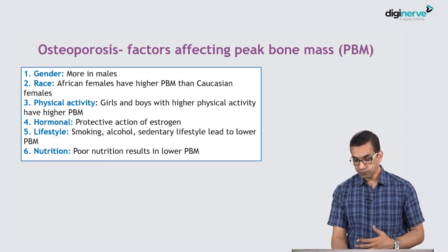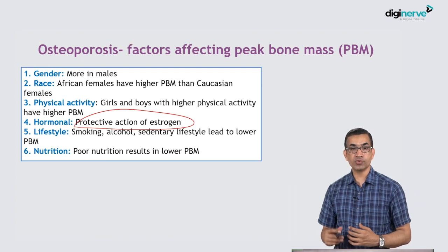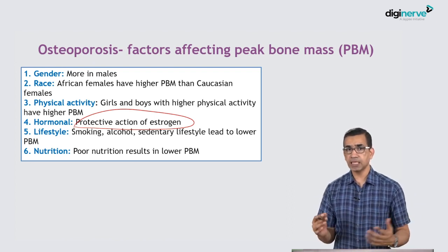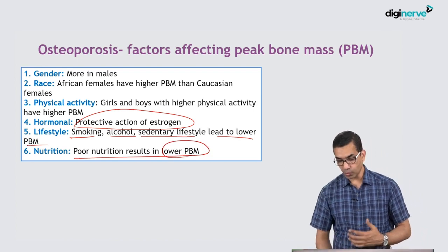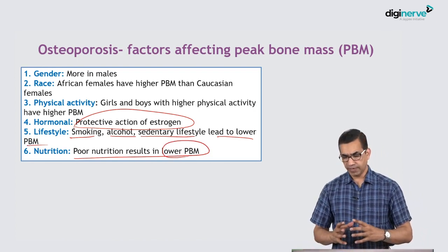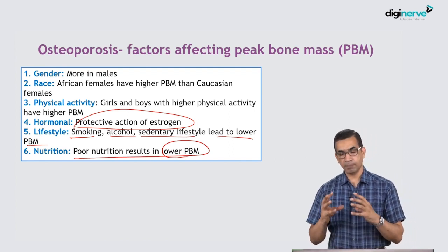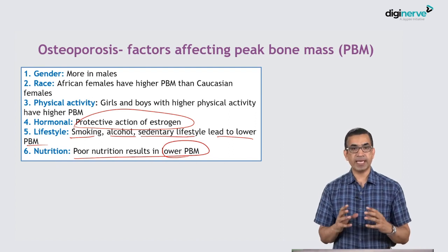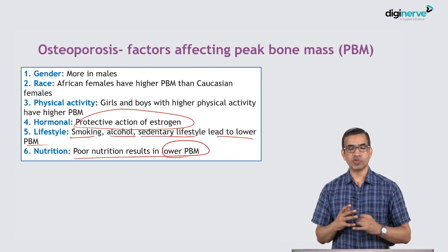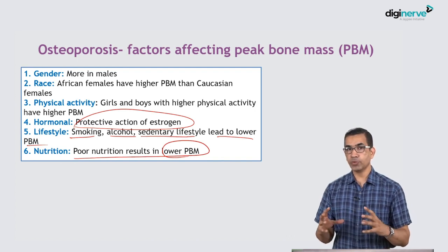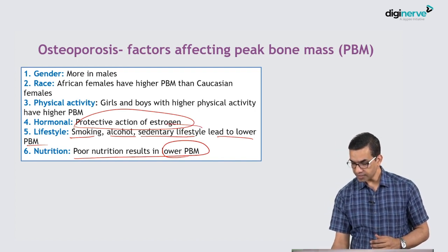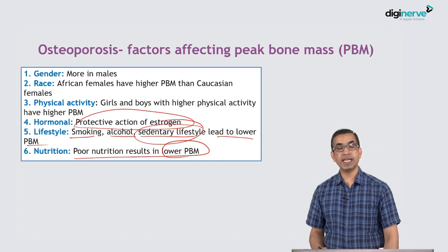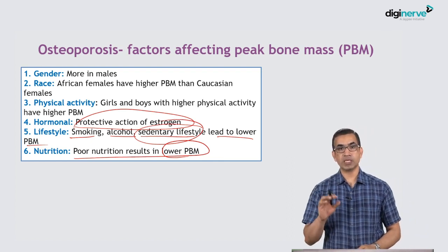Smoking, alcohol, and sedentary lifestyle lead to lower peak bone mass, and poor nutrition also leads to lower peak bone mass. In summary, staying away from habits like smoking, alcohol, and excess caffeine or soft drinks, combined with good physical activity and good nutritional status, determines a good peak bone mass. A sedentary lifestyle will ensure that peak bone mass attained at age 30 is lower.